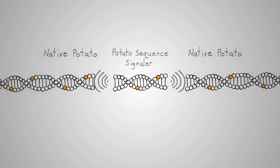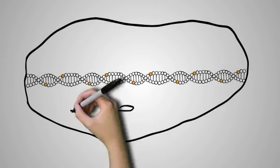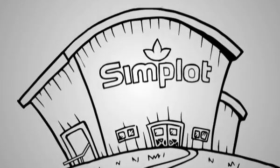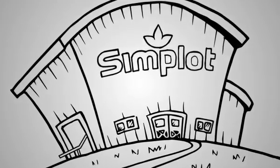Instead of random methods that affect hundreds of genes in a plant, the innate method is precise. This precision allows for improvement in two important potato traits.